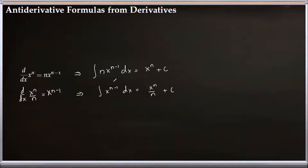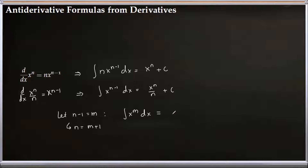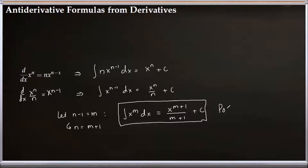Since we want a formula in terms of x^n, let's replace n minus 1 with a new variable m. If n minus 1 equals m, then n equals m plus 1. Substituting, the integral of x^m dx equals x^(m+1) over (m+1) plus C. This is the well-known power rule for integrals.